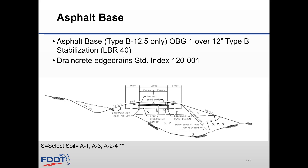The asphalt base type B 12.5 only optional group 1 consists of 4 inches of asphalt base over 12 inches of type B stabilization LBR 40. Standard plans index 120-001 shows the embankment utilization for rigid pavements using asphalt base.